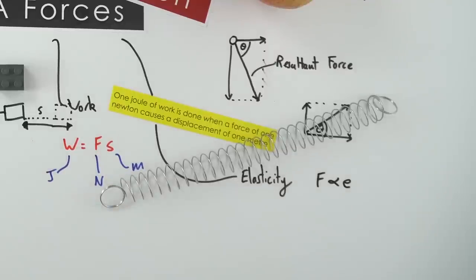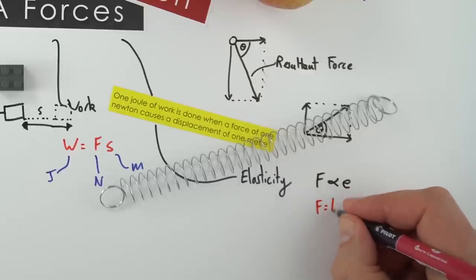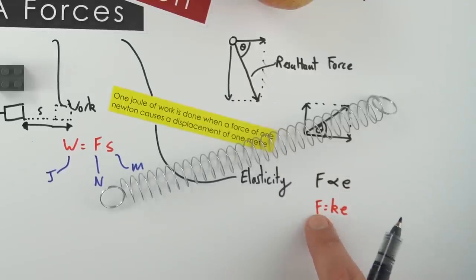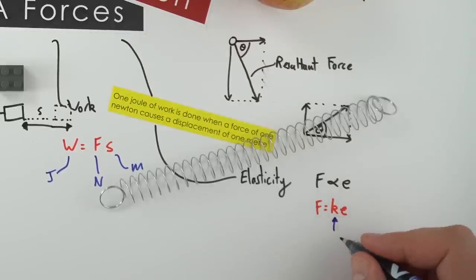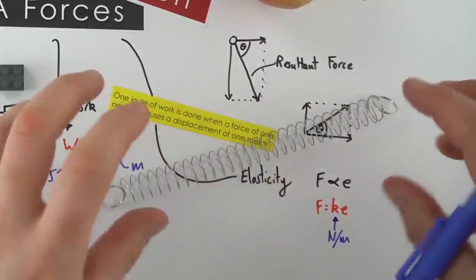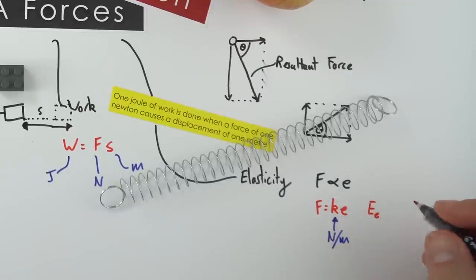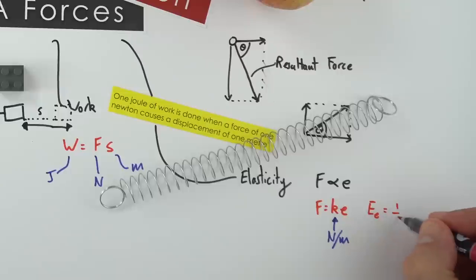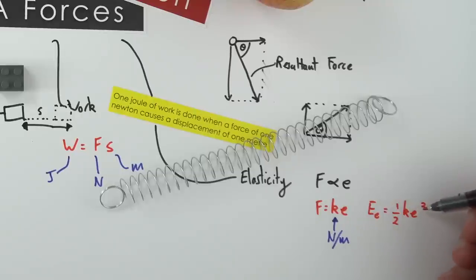Extension means how much longer the spring has become. The equation is F = ke, where force is in Newtons, extension in metres, and k is the spring stiffness constant with units of Newtons per metre. If you extend a spring, it can store energy in the elastic potential store: elastic energy = ½ke². This depends on how stiff the spring is and how much it's been extended.